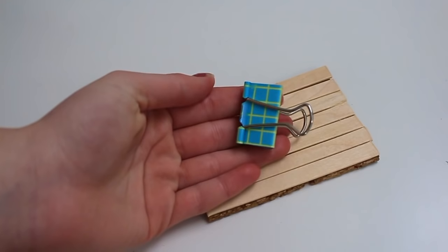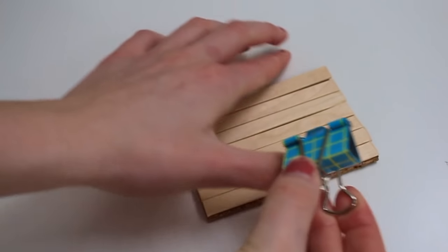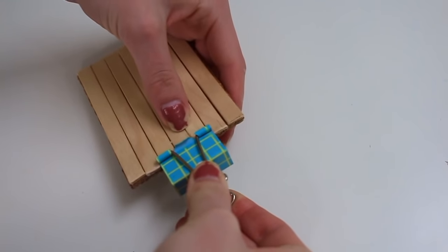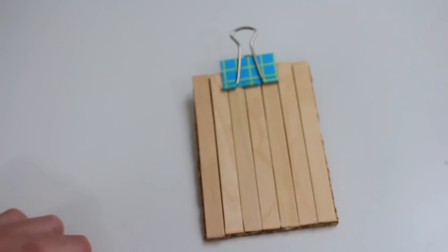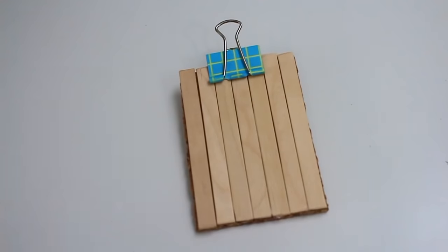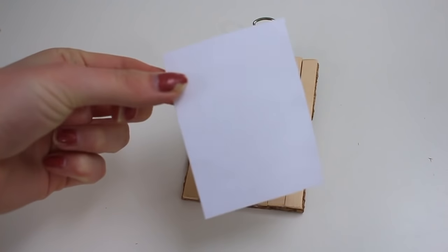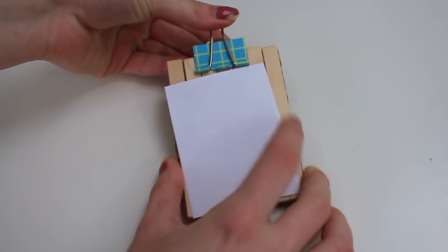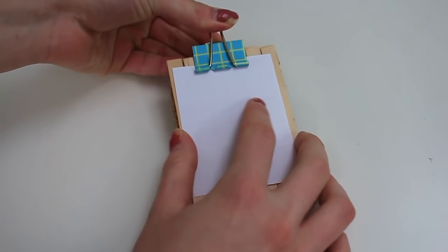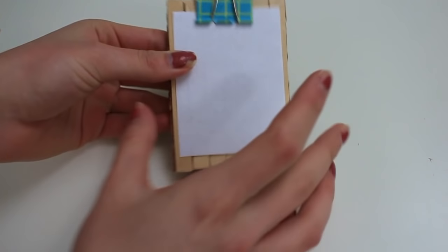But for the top clip part, I just used a binder clip and I feel like this is the easiest way to make a doll clipboard is to just use a binder clip as the clip part. So I just clipped that onto the top. Now moving on to the calendar portion. So I just began by cutting some white computer paper into rectangles, making sure that you would be able to see some of the wood from underneath so that you could still see the clipboard.